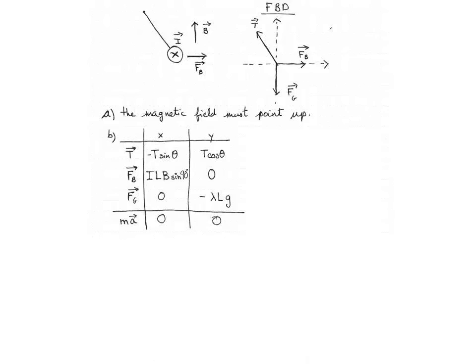Finally, for gravity, there's no x component, but the y component is minus mg. And I've replaced M with the mass per unit of length multiplied by the length of the rod. So kilograms divided by meters multiplied by meters will give us the total mass of the rod, of course.